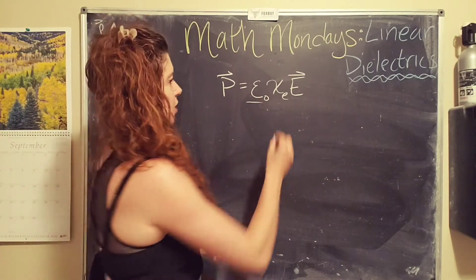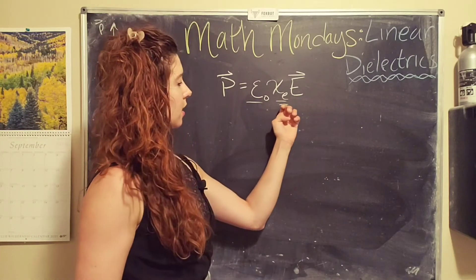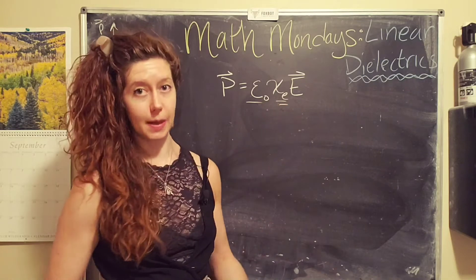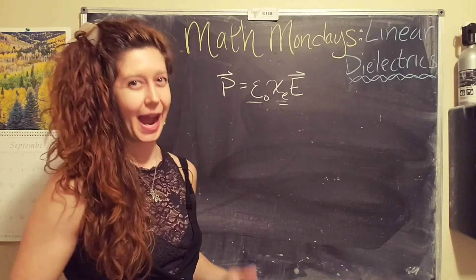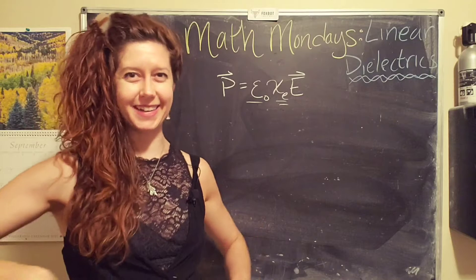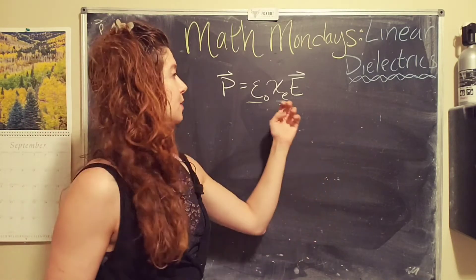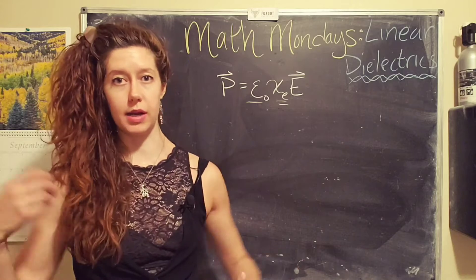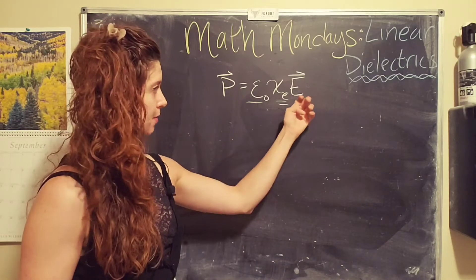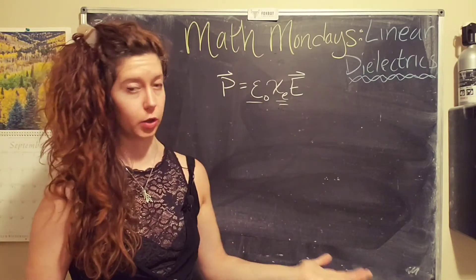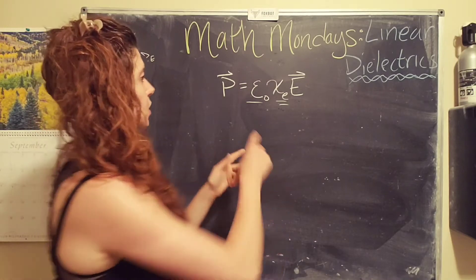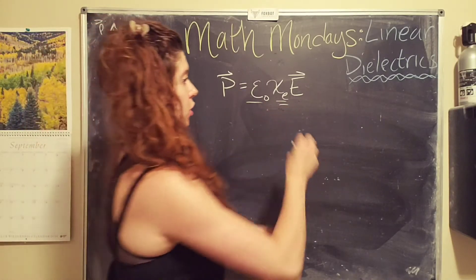So we know this constant, it never changes. This is called the electric susceptibility. Basically how susceptible the material is to being polarized. Materials that can be polarized more by the same electric field will have a higher value. Okay. So again, this is a linear term.